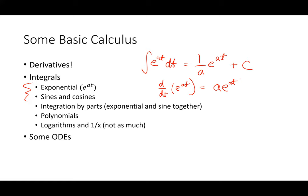You should know sine, cosine, exponentials, and polynomials cold. Your TI-89 or calculator can do that for you, but these things should be in your brain — they're as fundamental as one plus one as far as I'm concerned. You can use Wolfram Alpha or your calculator, but it'll kill you at exam time if you're relying on those tools. These are the things you'll see in this class, in fields and waves, signals and systems, and beyond.